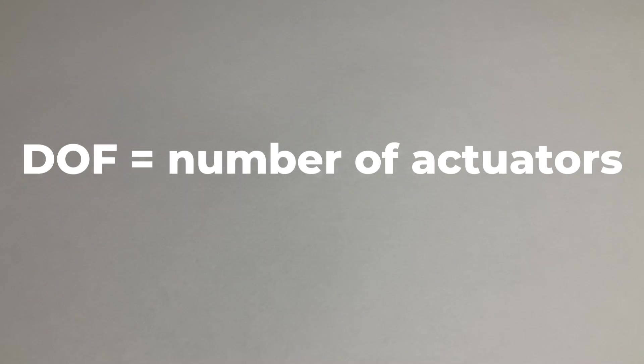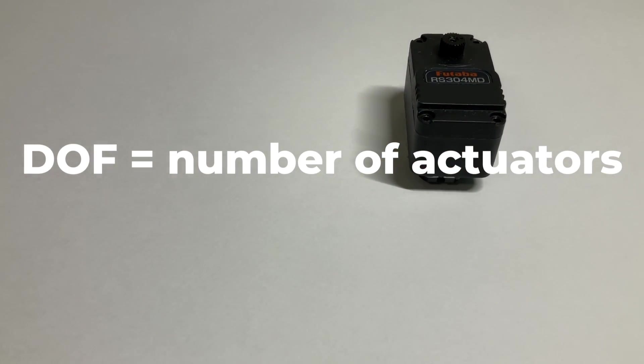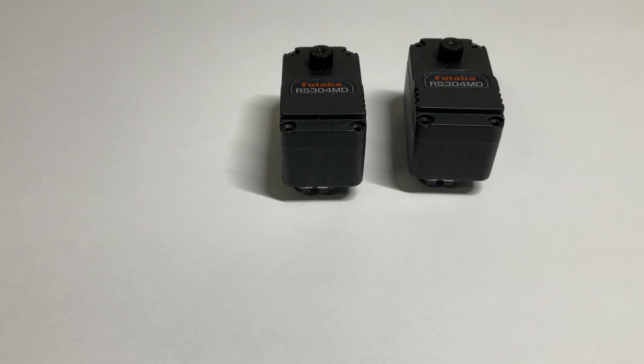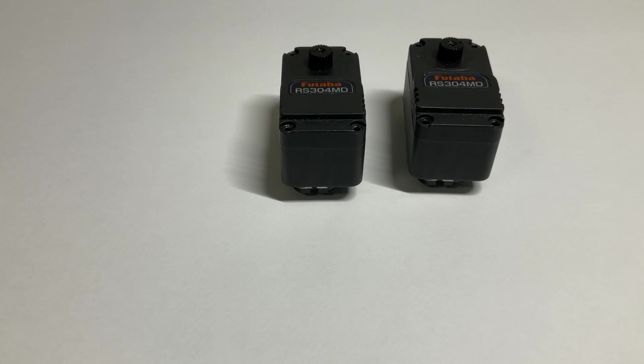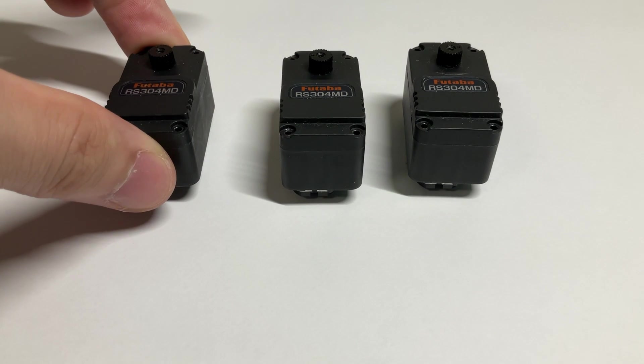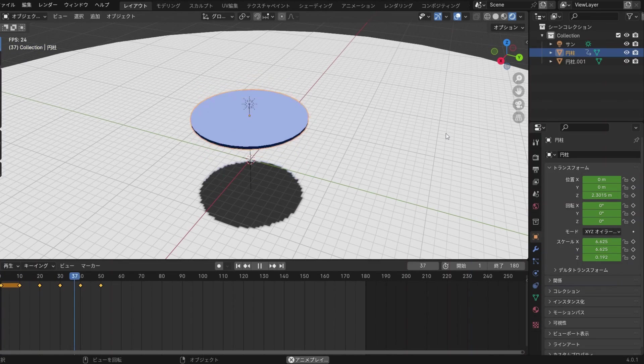There is a principle that the number of actuators is equal to the number of degrees of freedom of the robot. In this case, the number of motors required is two. In this project, however, we will add another degree of freedom by using three motors, which will allow the platform to move up and down in addition to tilting. This will even allow the ball to jump.